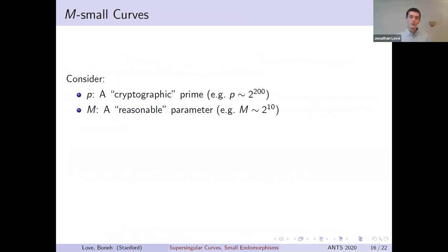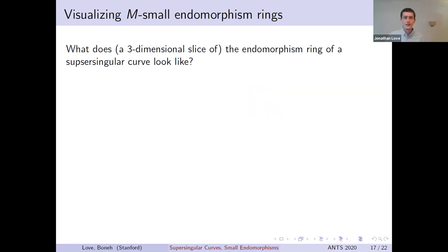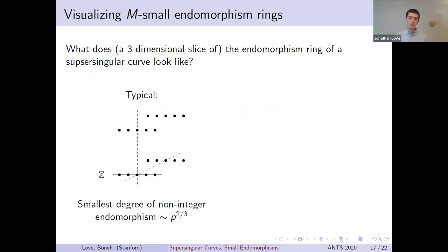For this section, we're going to take a gigantic prime p and a parameter m that, roughly speaking, should be small enough that it should be possible to perform computations that are polynomial in m. In this setup, we say that an elliptic curve is m-small if there exists a non-integer endomorphism of E that has degree at most m. These curves can be ordinary or supersingular, but among the set of supersingular curves, the m-small ones are fairly rare. Given a randomly chosen supersingular curve, the smallest non-integer endomorphism will typically have degree on the order of p to the two-thirds.